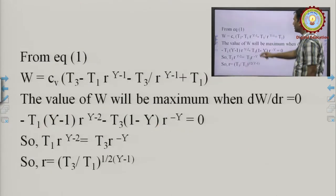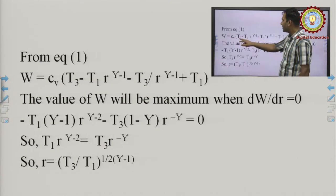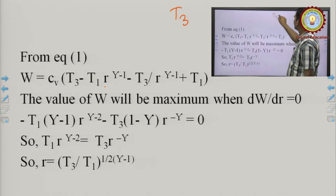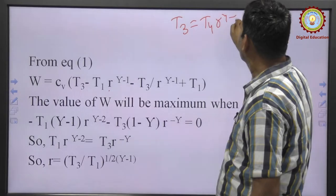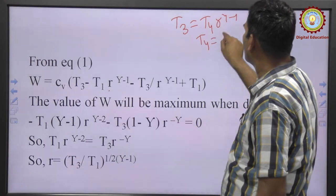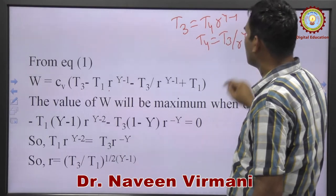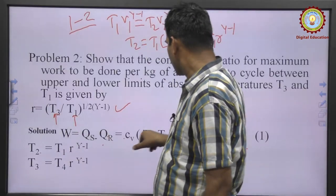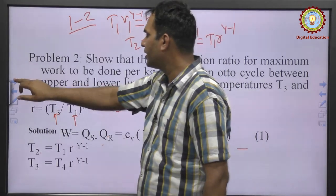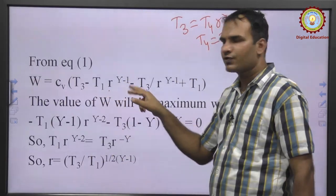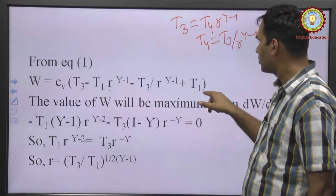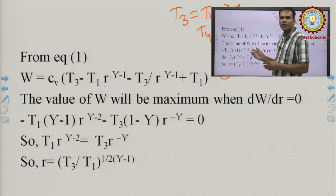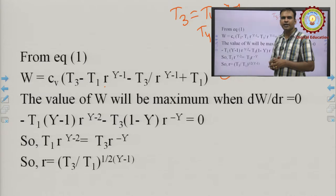Substituting T₂ = T₁r^(γ−1) and T₄ = T₃/r^(γ−1) into equation 1, we get W = C_v[T₃ − T₁r^(γ−1) − T₃r^(−(γ−1)) + T₁]. For maximum or minimum work, we differentiate W with respect to r and set the derivative equal to zero, keeping T₁ and T₃ constant.